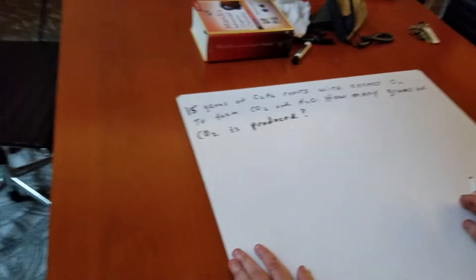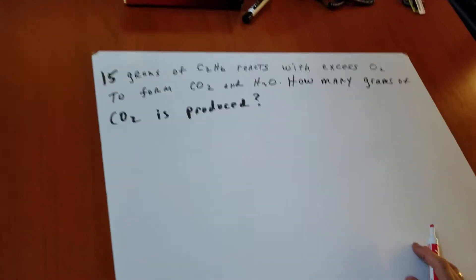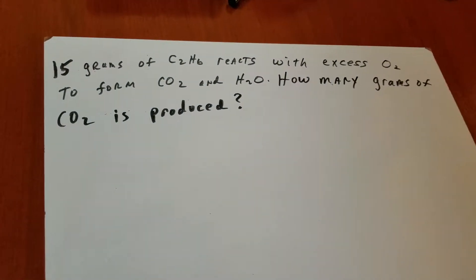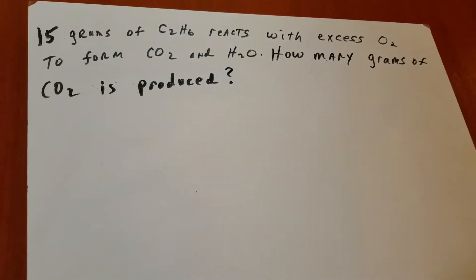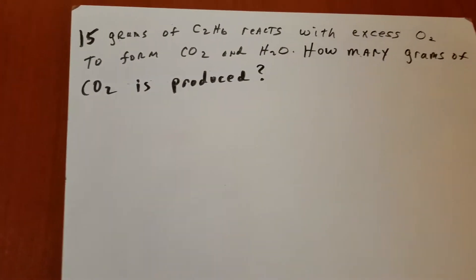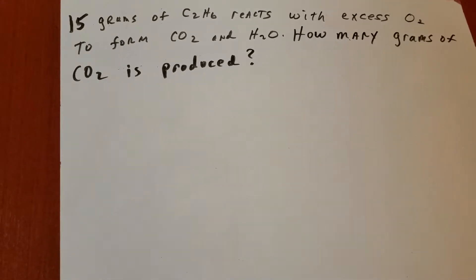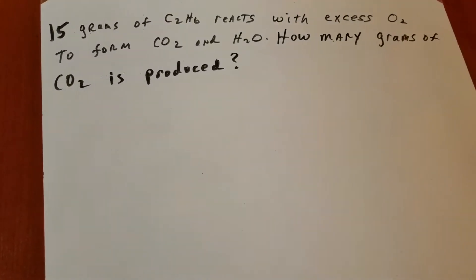Okay, I'm going to do a general chemistry problem that'll be very demonstrative of what you're going to see on the actual DAT exam. So let's get right down to it. We have 15 grams of ethane reacts with excess oxygen to form CO2 and water. How many grams of CO2 is produced?